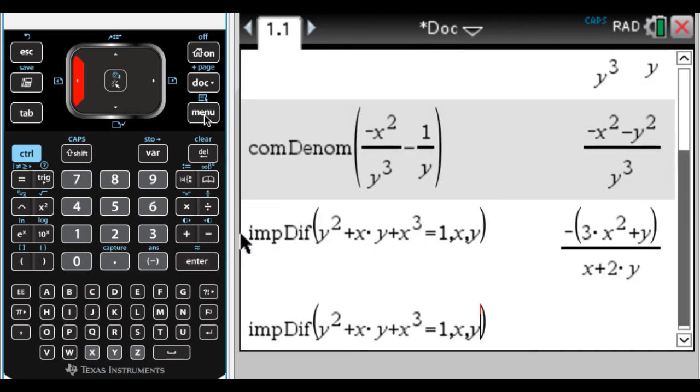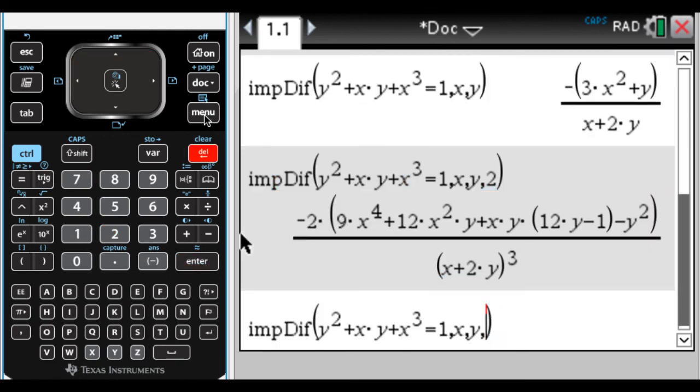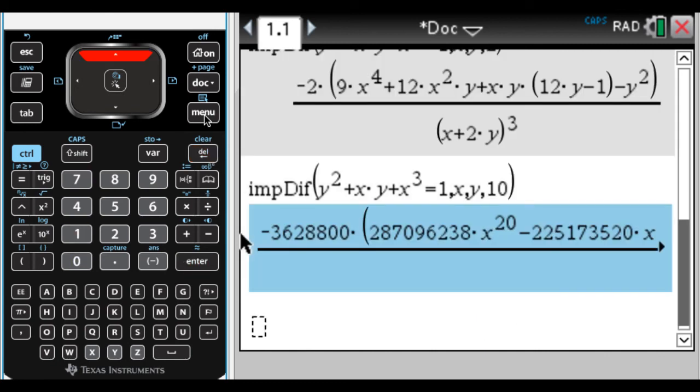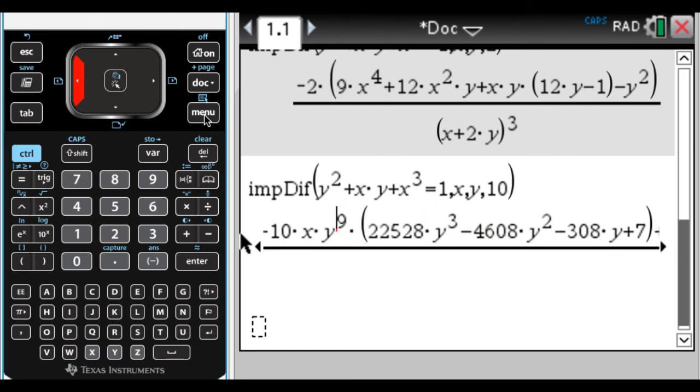If I go back up and put comma 2, it'll find the second derivative, which is out of hand. If I go back up and do comma 10, let's see what it does. It takes a while, but it actually gets it. You would almost certainly never get that by hand. It's going to take me forever just to scroll through it, so I'm not actually going to finish that.